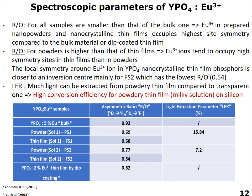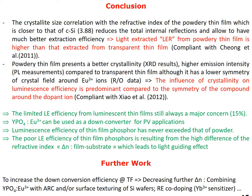Considering the light extraction ratio values, we can see that we can extract much more light from powdery thin films than from transparent ones. As a conclusion, the crystallite size correlation with the refractive index of the powdery thin film, which is closer to that of crystalline silicon, reduces total internal reflections and allows much better extraction efficiency. Light extracted from the powdery thin film is higher than that extracted from the transparent thin film. The powdery thin film also presents better crystallinity and higher emission intensity, although it has lower symmetry of the crystal field around europium ions according to asymmetric ratio data, which implies that the influence of crystallinity on luminescence efficiency is predominant compared to the symmetry around the dopant ion.